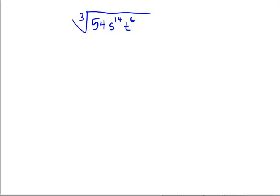So assuming you paused and tried this out on your own, I'm actually going to jump and show you how I would just do the answer. I know that 27 times 2 is 54. So I'm going to put the 3 out in front for the cube root of 27, and then the 2 in here for the 54.